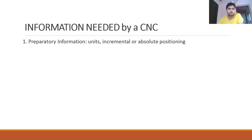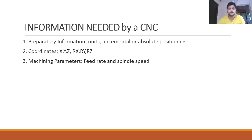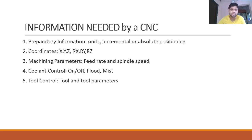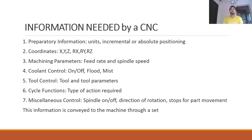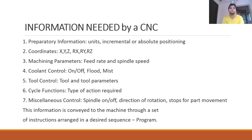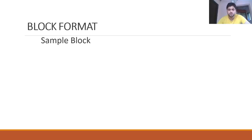The CNC requires several types of information: preparatory information (units, incremental or absolute positioning); coordinate information (X, Y, Z, rotational axes); machining parameters (feed rate, spindle speed); coolant information (on/off, flood or mist type); tool control (tool and tool parameters); cycle functions (type of action required); and miscellaneous control (spindle on/off, direction, stop). All this information is conveyed through a set of instructions arranged in a desired sequence — the CNC part program.